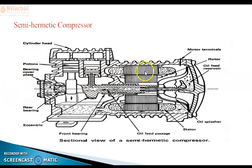The motor winding and compressor part include a piston and cylinder head. These are not permanent joints — they are temporary nut-and-bolt joints, so we can easily replace the parts and perform maintenance.